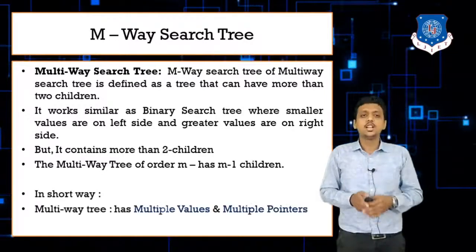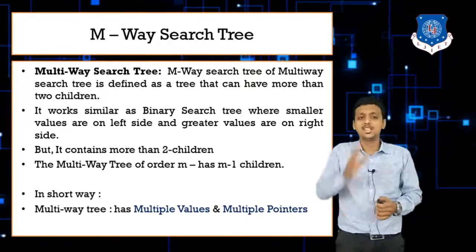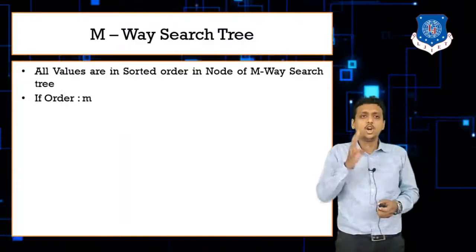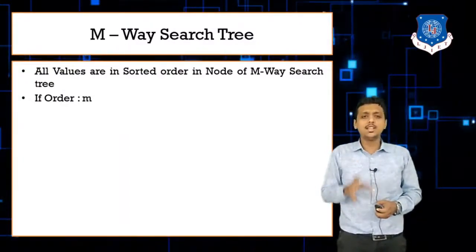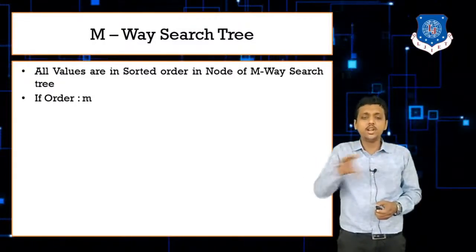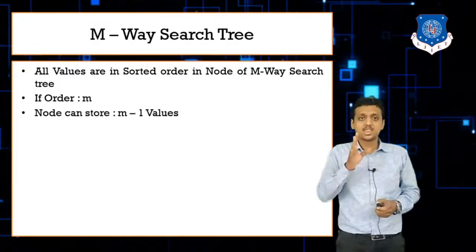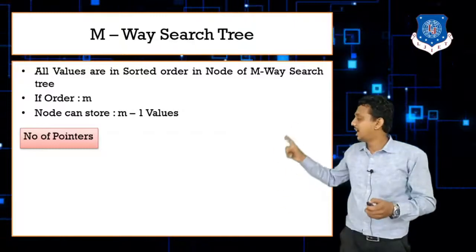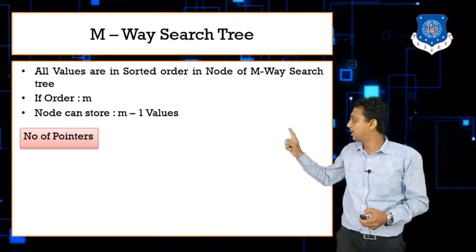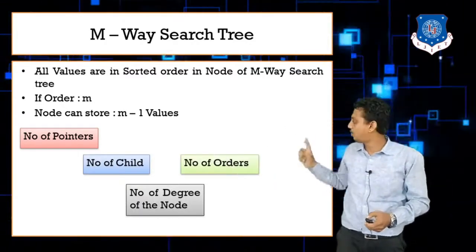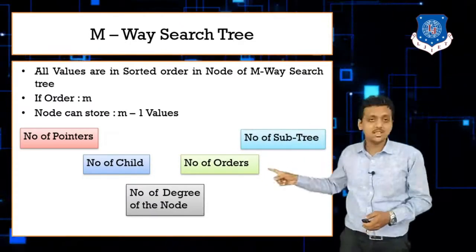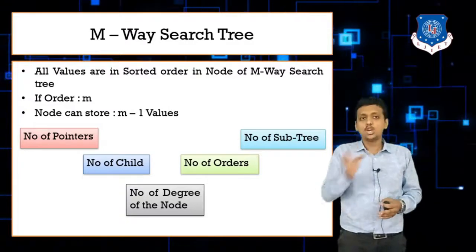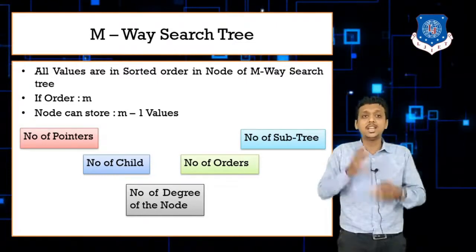In short, a tree that contains multiple values and multiple pointers is known as an M-way search tree. All values are stored in ascending order. Always remember: number of order equals number of pointers equals number of children equals number of degrees equals number of subtrees — all five things are equal to each other.